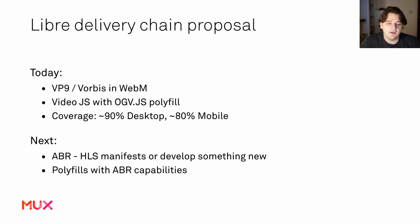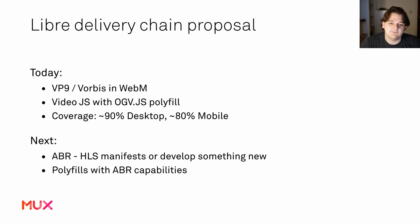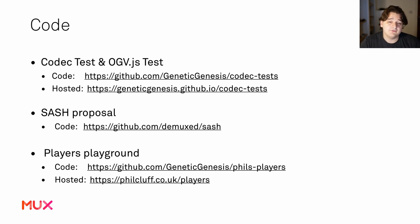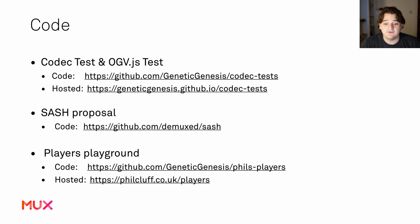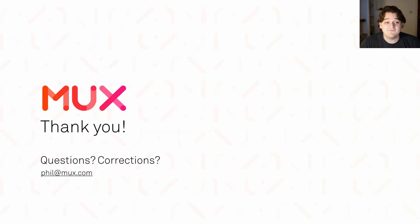Here's my proposal: VP9 and Vorbis in WebM, with Video.js and the ogv.js polyfill, gets about 90% desktop coverage and 80% mobile coverage today. Then we work on ABR, decide on an open adaptive bitrate direction, and build polyfills with ABR capabilities. All the code and examples shown are open: the codec test page is forkable on GitHub, the SASH proposal is public — please give feedback and fix my JavaScript — and there's my Players Playground where you can learn how video works on the internet. Thank you all for listening, and you can reach me at phil@mux.com.